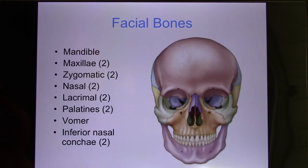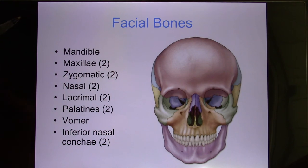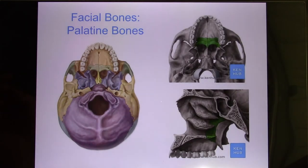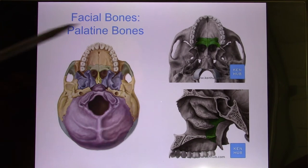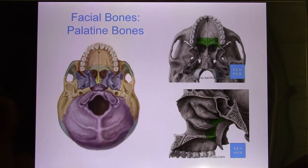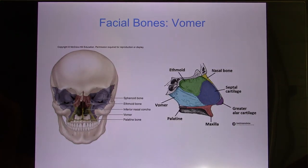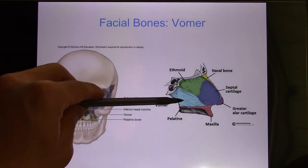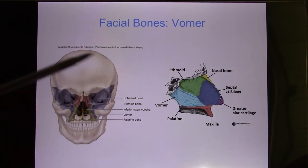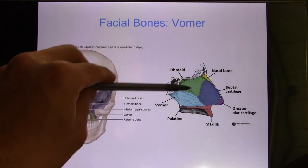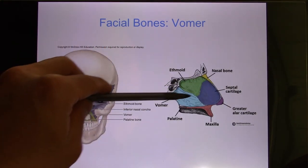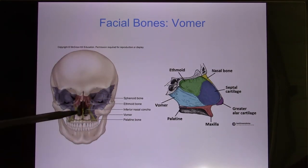Your face is like a 3D puzzle — all these are irregular bones. The palatine bone creates your oral cavity. The vomer, together with the perpendicular plate of the ethmoid bone and the septal cartilage, separates the nasal cavity.